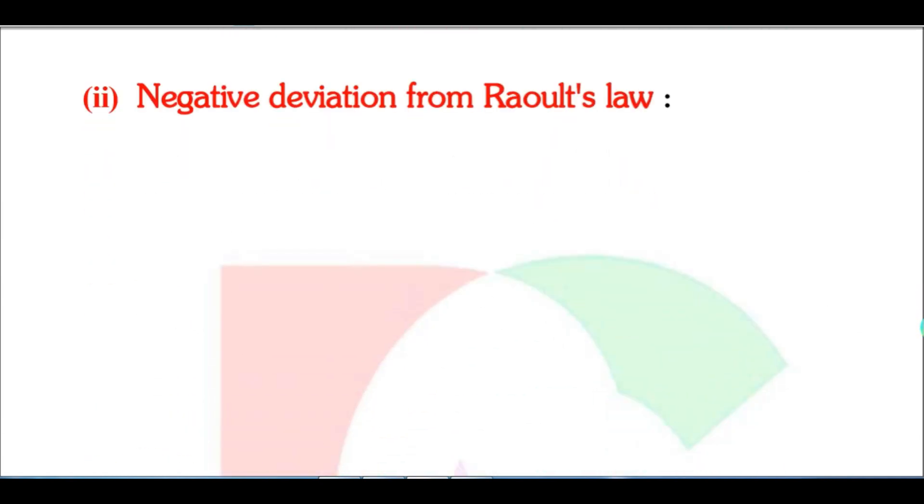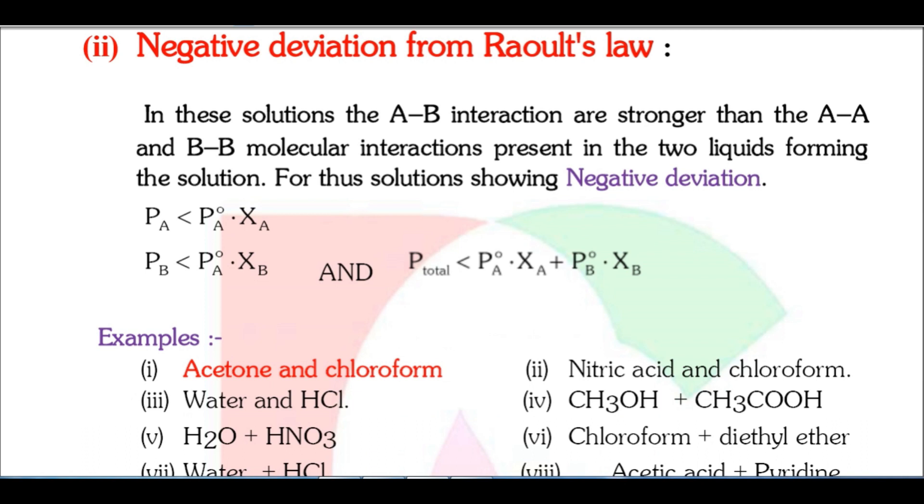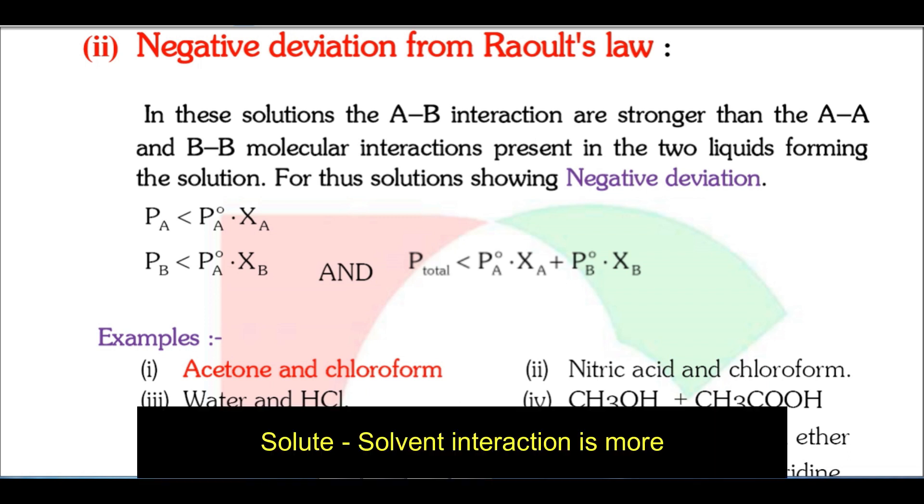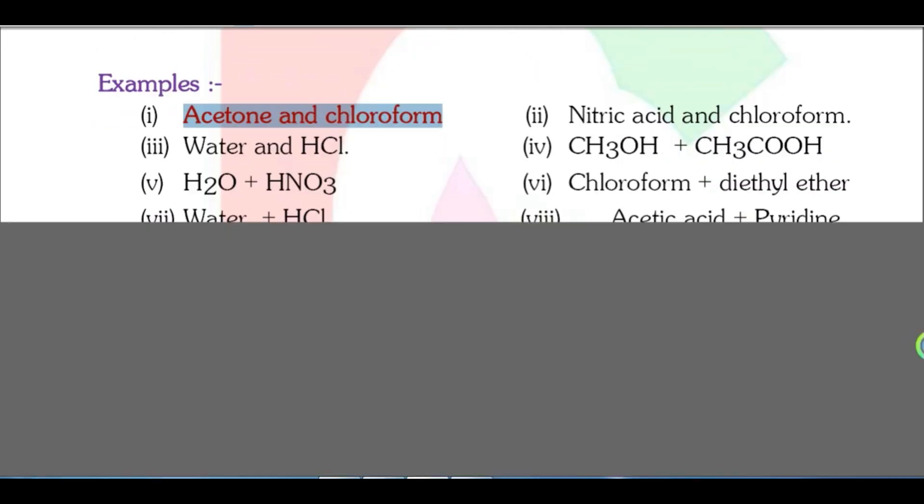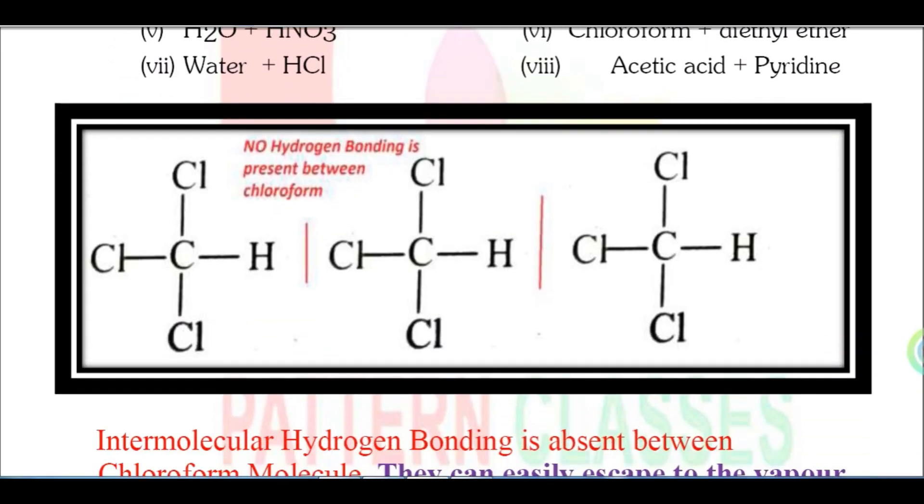Now for negative deviation. Negative deviation is opposite to positive deviation. Here, the interaction between solute-solute or solvent-solvent is weaker, but the interaction between solute-solvent becomes much stronger. A good example is acetone and chloroform.